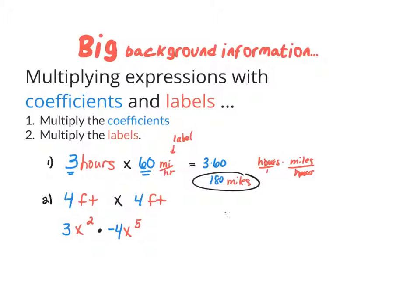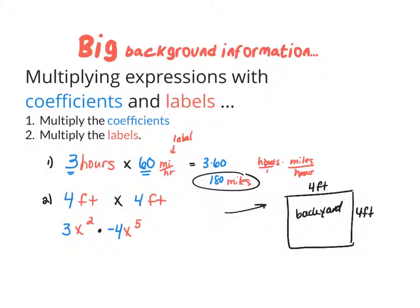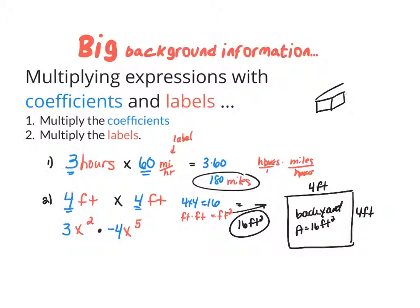Think about a fence or a geometric figure — say a backyard patio space that's 4 feet long by 4 feet wide. If I multiply those to find area, I multiply the coefficients: 4 times 4 is 16. And I multiply the labels: feet times feet gives feet squared. So the area is 16 square feet, appropriate because area is measured in square units. That extends to 3D: 4 feet by 4 feet by 4 feet — multiply all coefficients and all labels — and we're calculating volume, measured in cubic units.